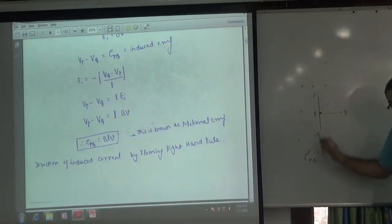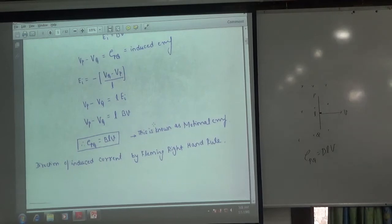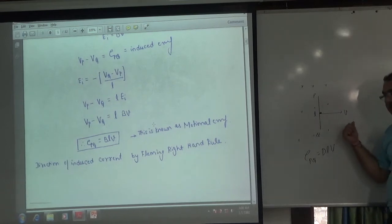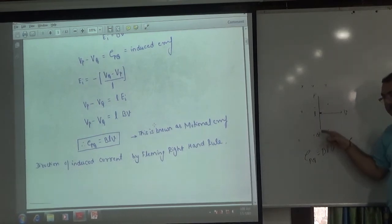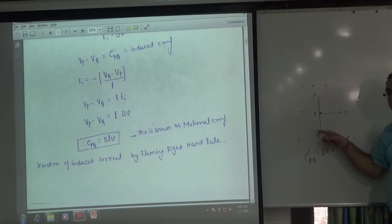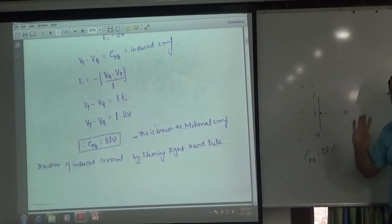If the velocity vector is right, where does EMF develop? Perpendicular line, or P and Q. Clear?